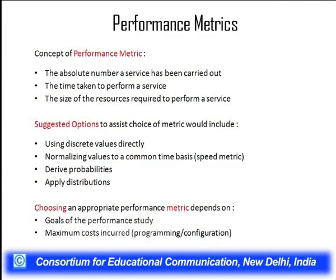Different choices affect the performance of a computing system. The input values taken could be discrete values, random distributions, probability derivations, or functional derivations. It could also be values normalized on a given scale. When normalizing values on a given scale, we are bringing different inputs onto a common platform or range so that comparison becomes easier and the analysis becomes fairer.